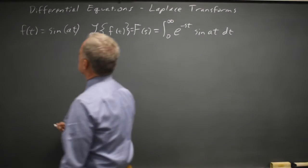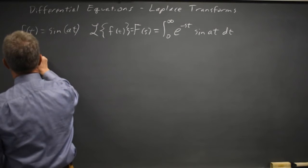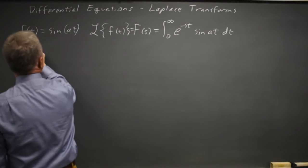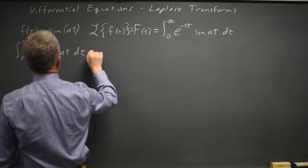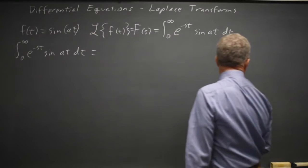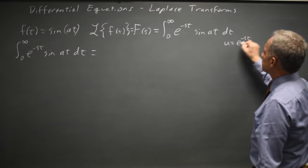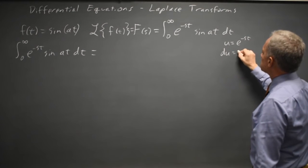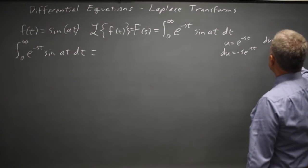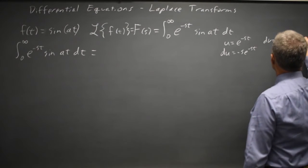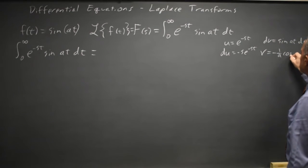This is going to be integration by parts. I'll be formal and keep the limits of integration. My parts will be u equals the exponential e to the negative st, du equals negative s e to the negative st. So dv is the trig function sine at, and v is negative 1 over a cosine at.